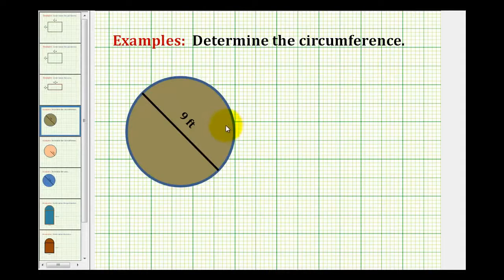We need to determine the circumference of the given circle, and the circumference is the same as the perimeter, which would be the distance around the circle, highlighted here in orange.